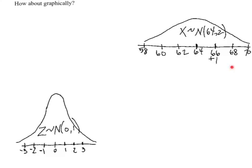Similarly, 68 is 2 standard deviations above the mean. Why don't we represent that by positive 2? 70 is 3 standard deviations above the mean so we can represent that by positive 3 and we'll let 64 be the center or 0.